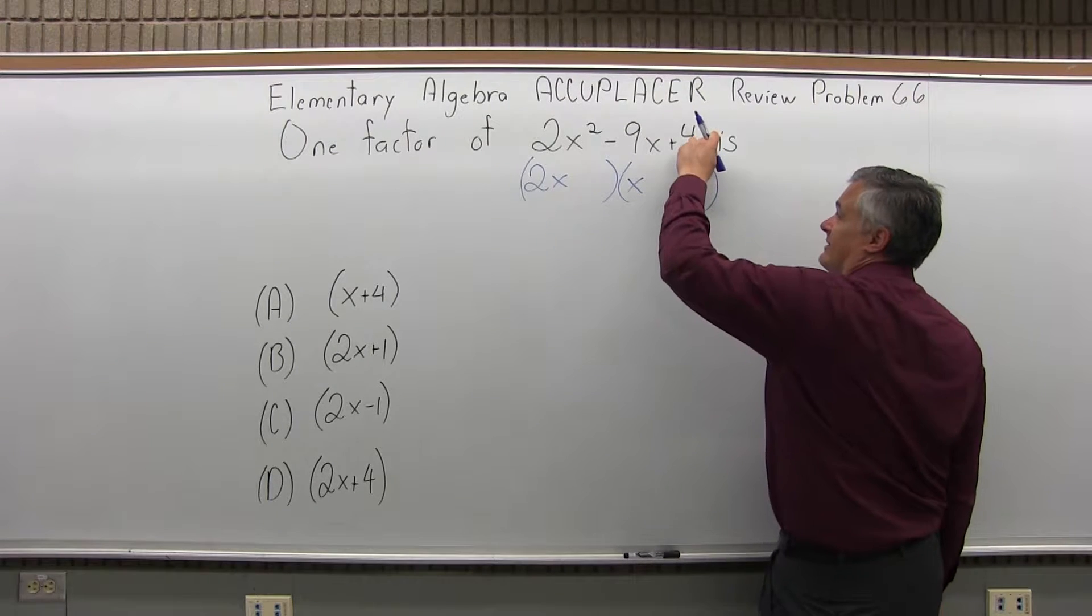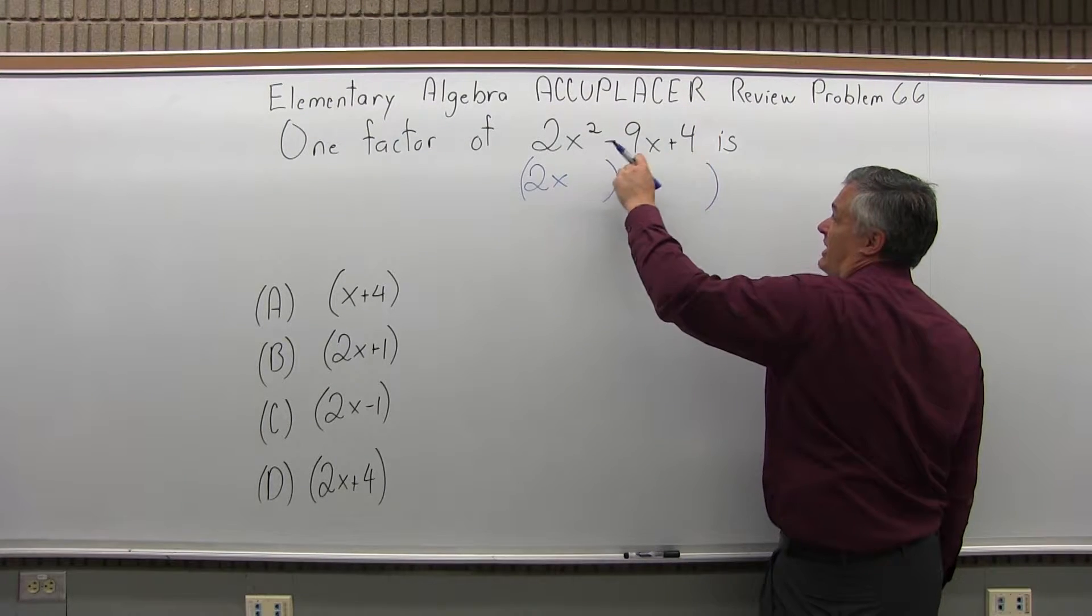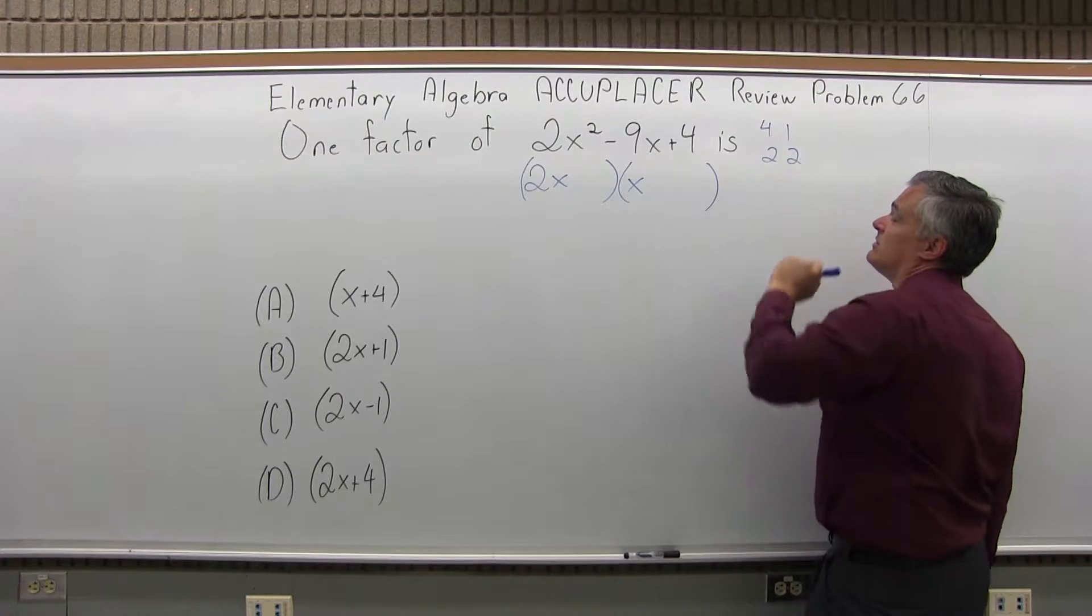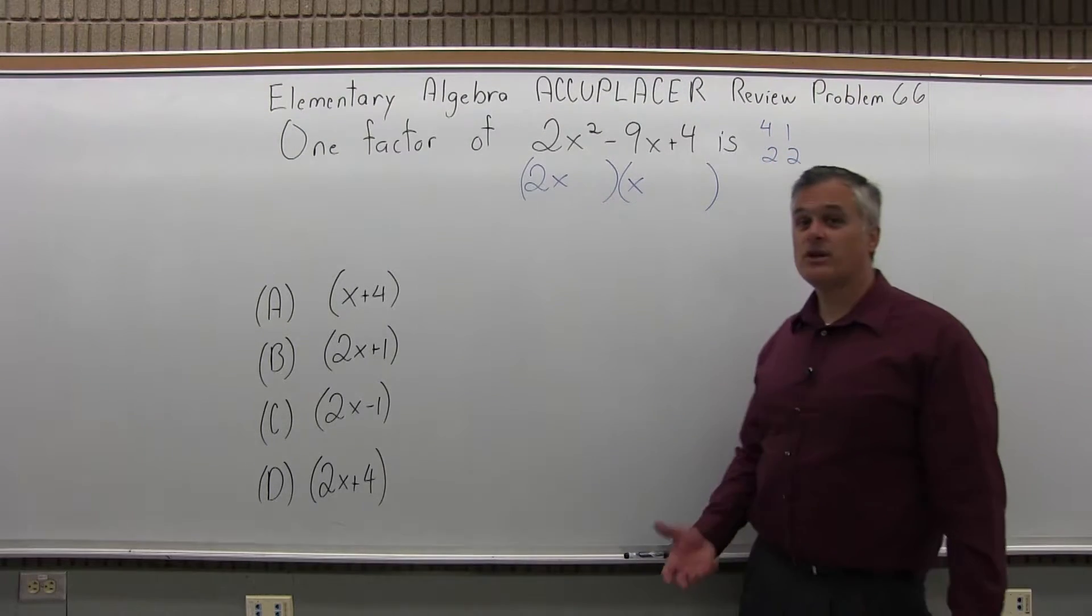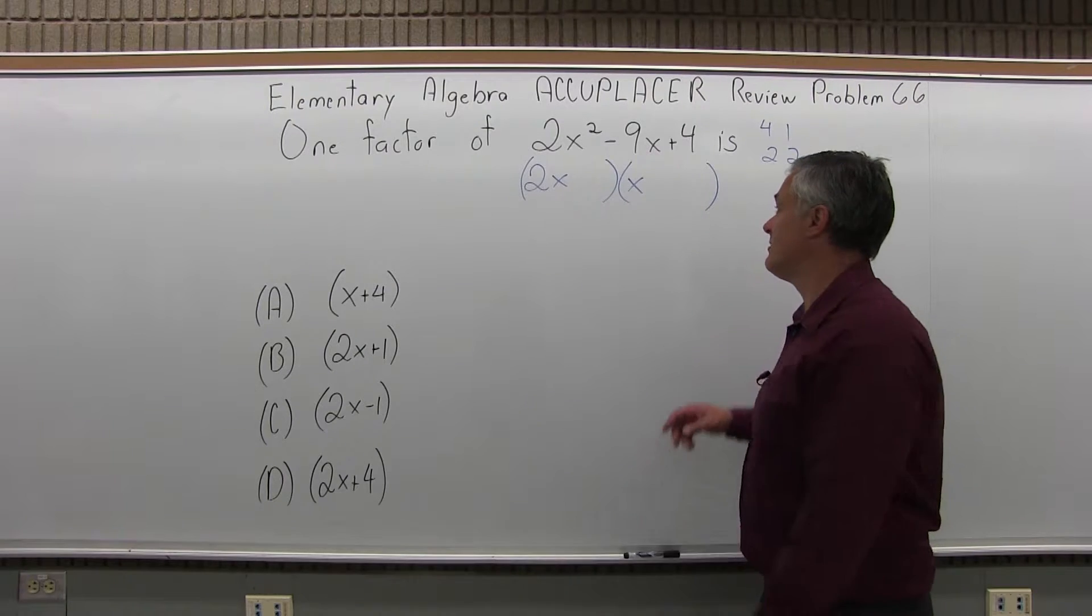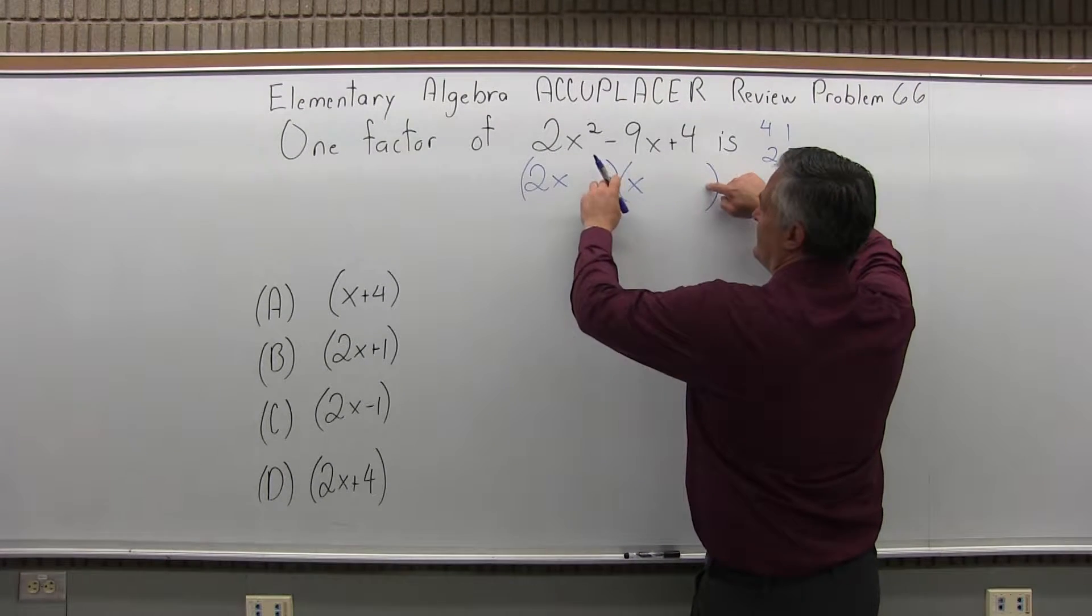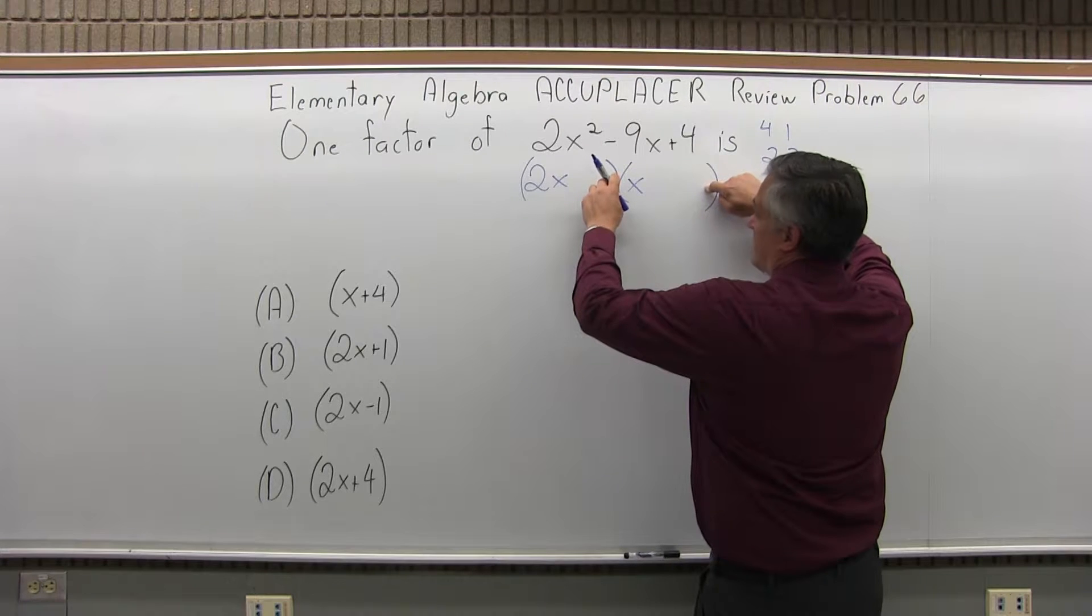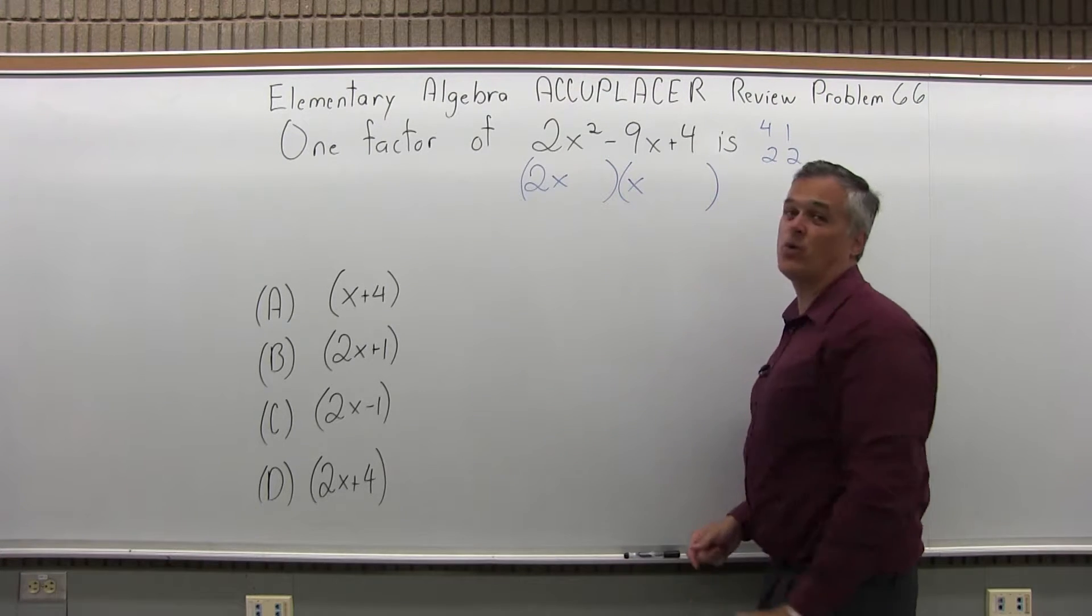Now, the piece on the end that I need to make by multiplying is a 4. So it could be 4 times 1 or 2 times 2. Usually the smaller numbers are more likely to give you the result. But if I put in the 2 and the 2, I would get a 4x, a 2x. If I add them, I'd get 6x; subtract them, I'd get 2x. It's not going to work.